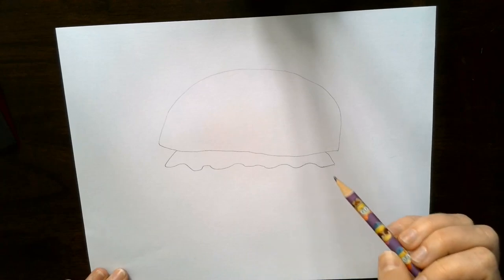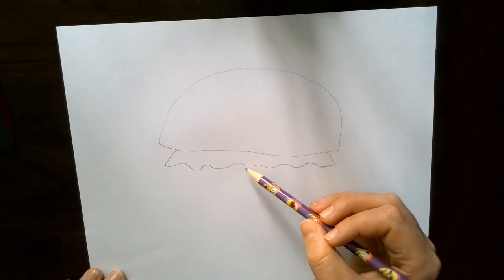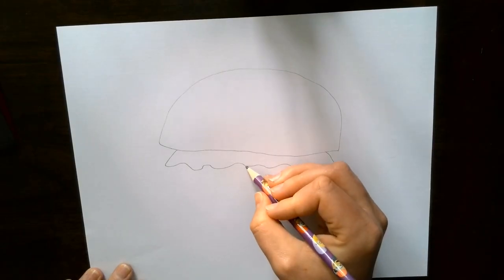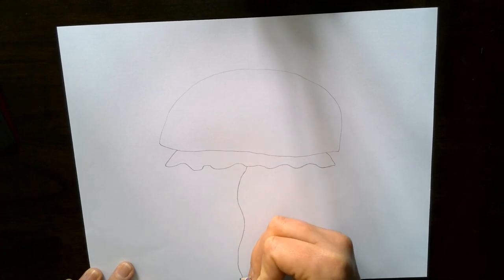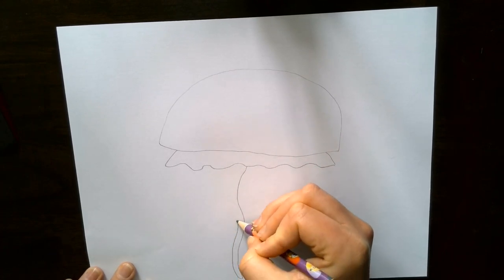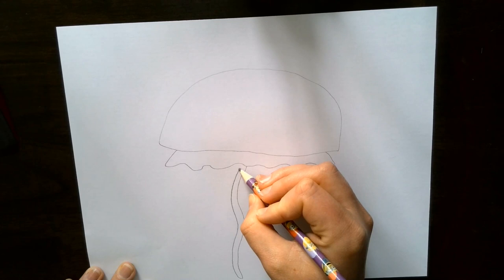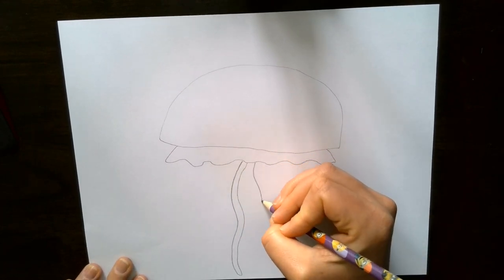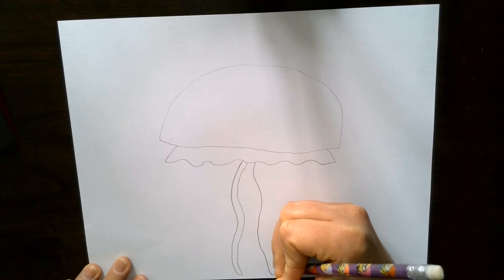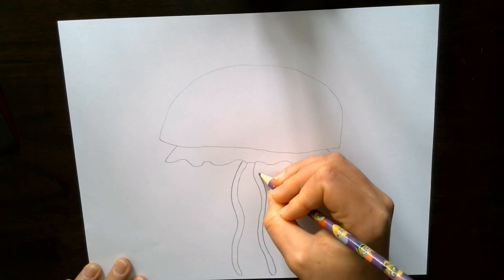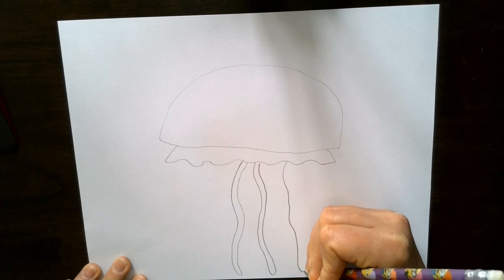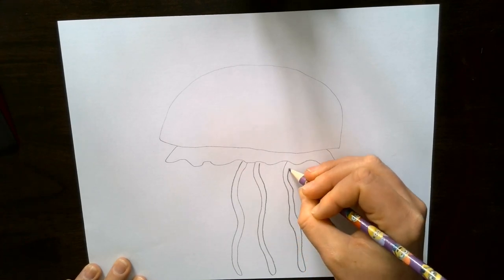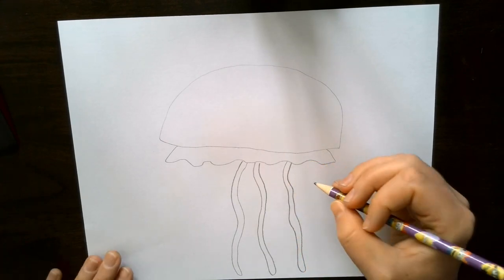Next we're going to start their tentacles. I also learned something new today, that not all jellyfish have the same amount of tentacles. They can have up to 15, but some of them have less. So you decide how many you'd like, and you can see I'm just doing them like long stretched out pieces of spaghetti. So fill in your tentacles as many as you'd like.